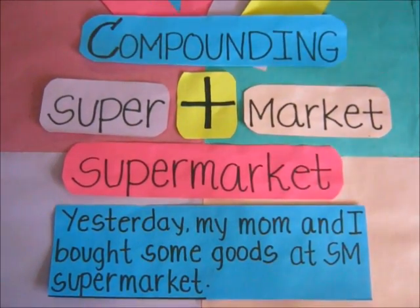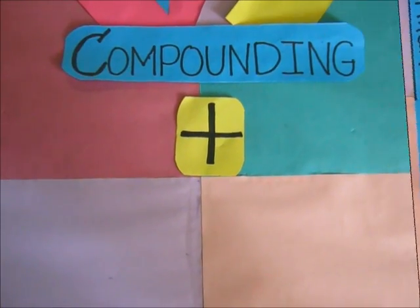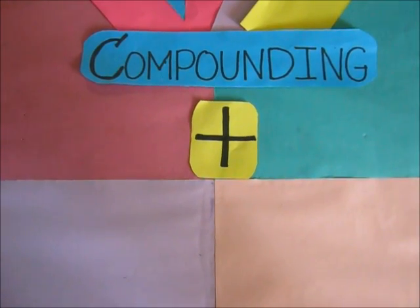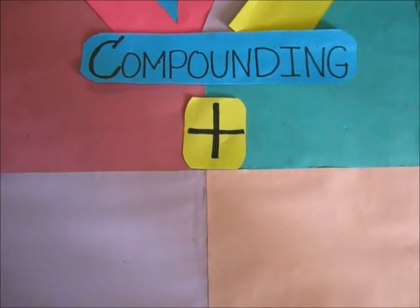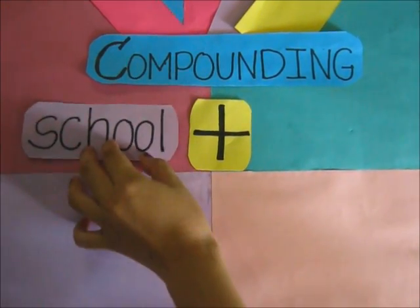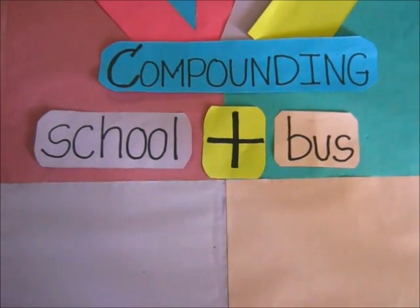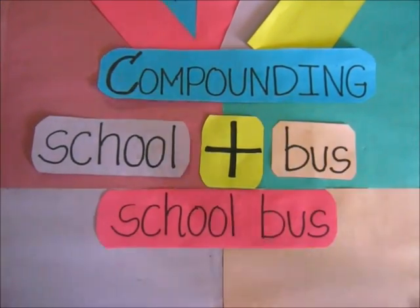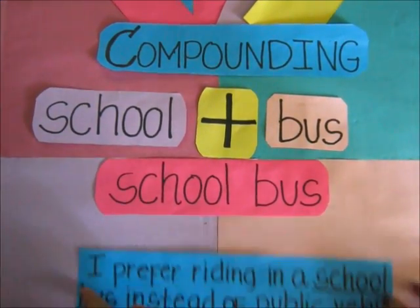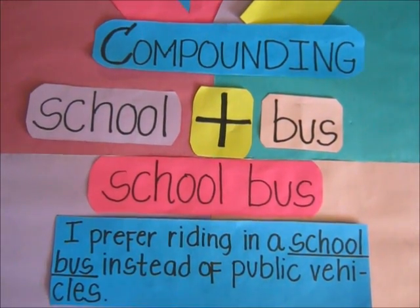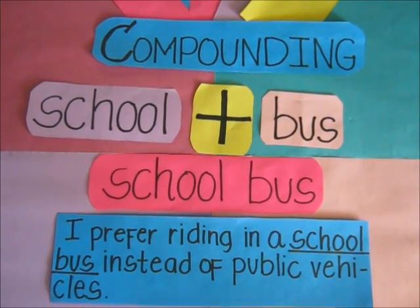Let's use 'supermarket' in a sentence. For example: 'Yesterday my mom and I bought some goods at SM Supermarket.' Let's have another example of compounding. Here we have 'school' plus 'bus,' and when we join them together we have 'school bus.' For example: 'I prefer riding in a school bus instead of public vehicles.'